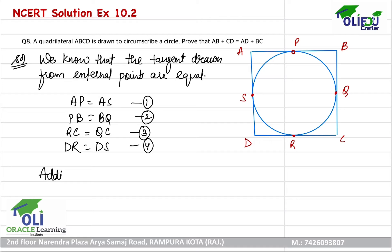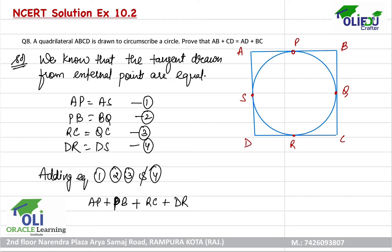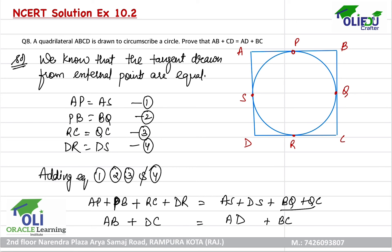Now we will add equations 1, 2, 3, and 4. We get AP plus PB plus RC plus DR is equals to AS plus DS plus BQ plus QC. Here, QC plus BQ makes BC; AS plus DS makes AD; AP plus BP makes AB; and CR plus DR makes DC. So the final answer is AB plus DC is equals to AD plus BC.